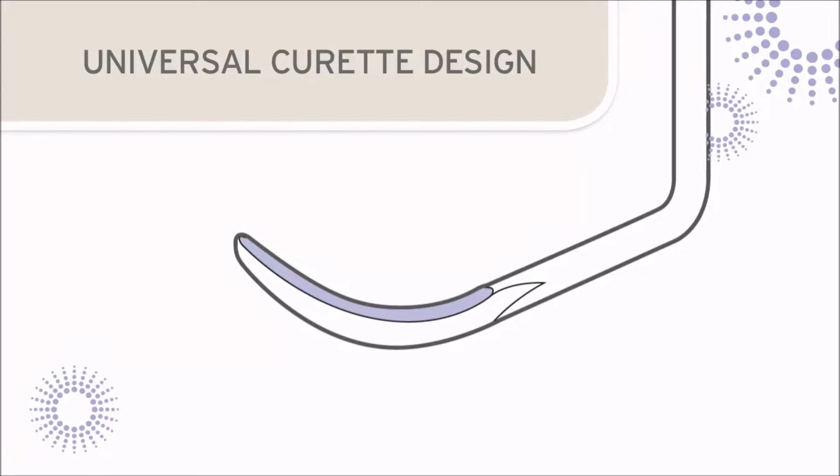The cutting edges are formed by the junction of the facial surface with the two lateral surfaces. The two cutting edges meet at the end of the instrument to form a rounded toe.